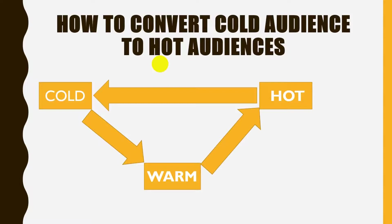This is where the money is — your hot audience. You need to convert cold to warm, warm to hot, and so on. It's possible to have 10,000 cold audiences, 100 warm audiences, but only five hot audiences. Your goal as an internet marketer is to increase your hot audience base. Also take note: it is possible for your hot audience to go cold.